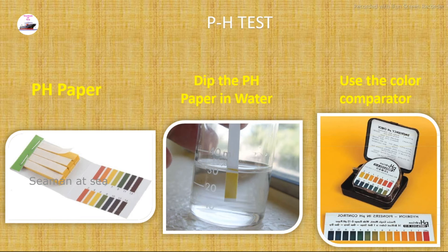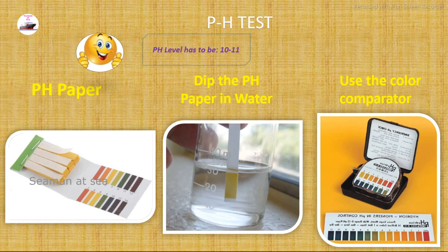For the pH test, we take a pH paper and dip it into the boiler water. The color will start to change. We then check with the color comparator, which shows us the pH value present in the water. The pH level should be 10 to 11 — this is the acceptable value by every surveyor.